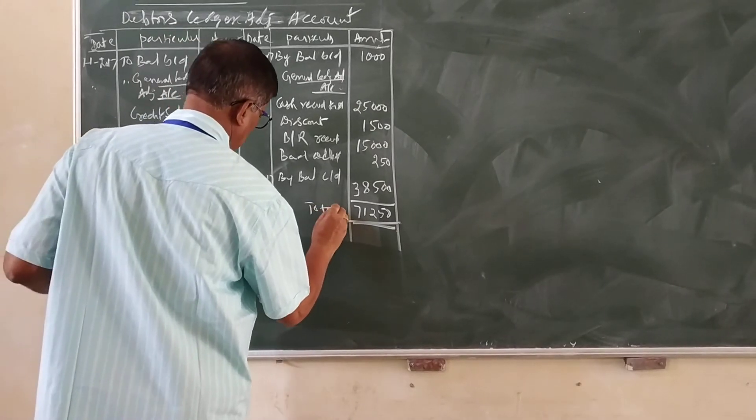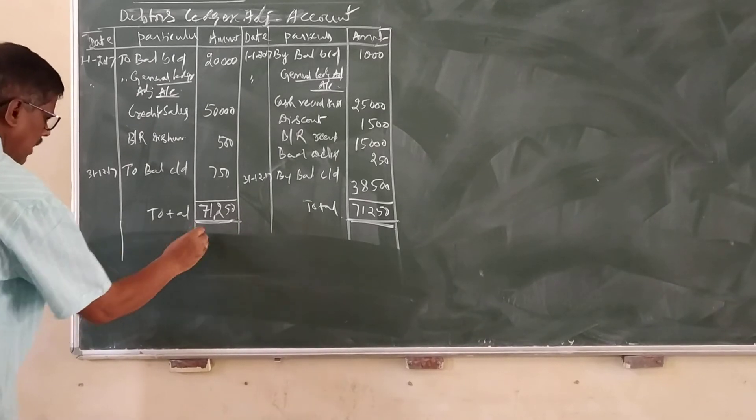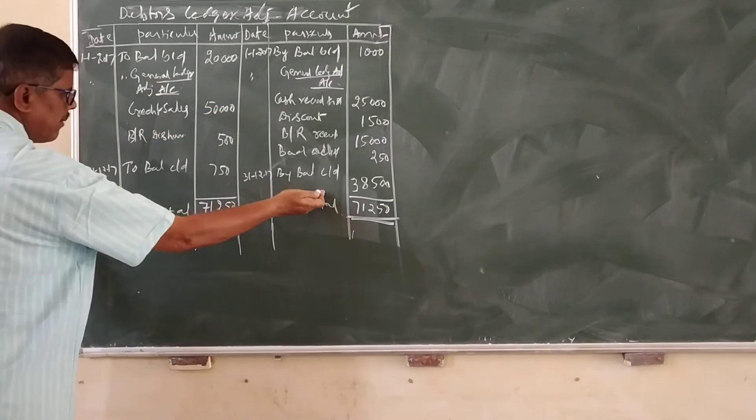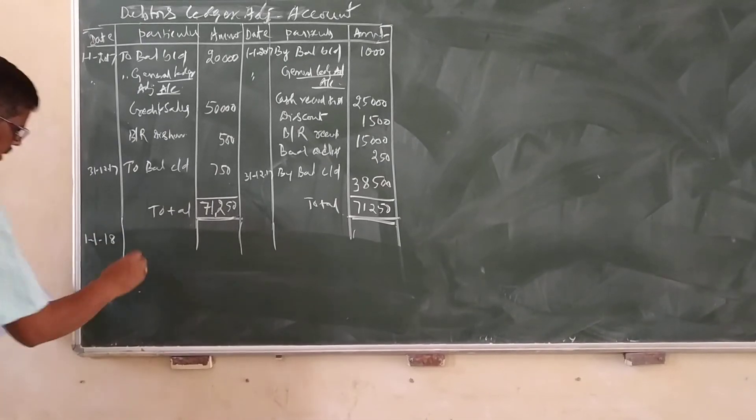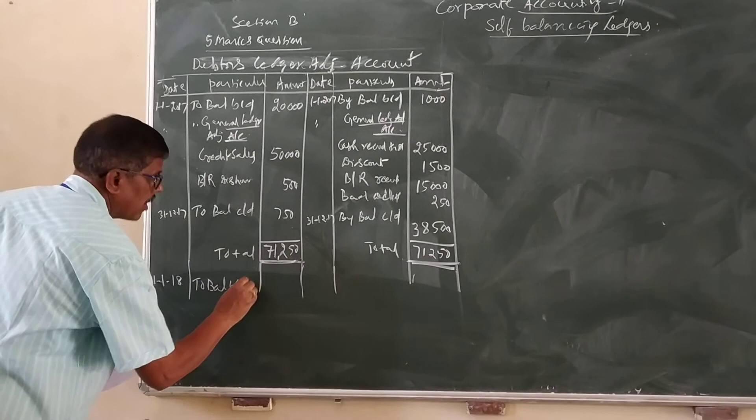Total. Here we carry forward the balances. Same balances carry forward to here, debit side. 1-1-18, next year, to balance b/d 38,500.